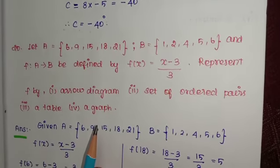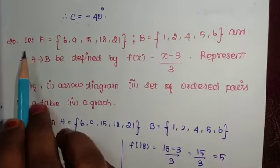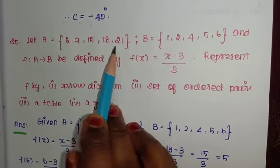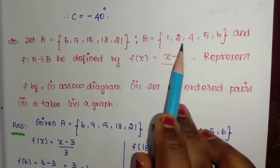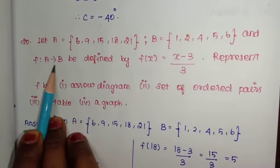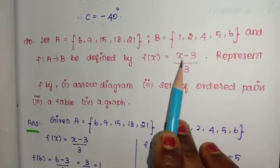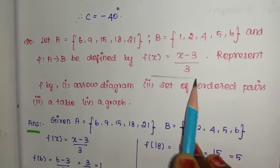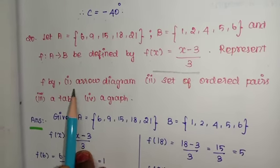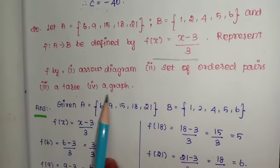Welcome to LN Solutions. Important 5 mark sums — sum number 20. Let A = {6, 9, 15, 18, 21}, B = {1, 2, 4, 5, 6}, and F: A → B defined by F(x) = (x − 3) / 3. Represent F by arrow diagram, set of ordered pairs, a table, and a graph.